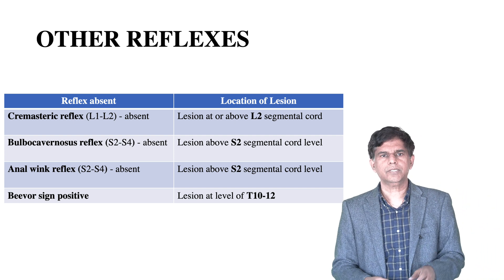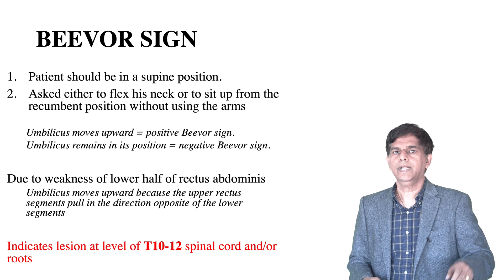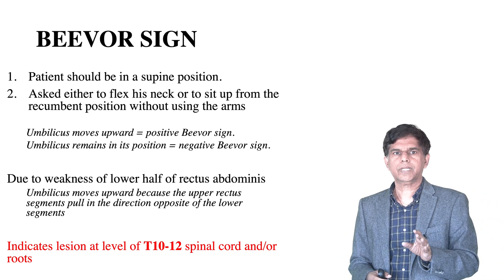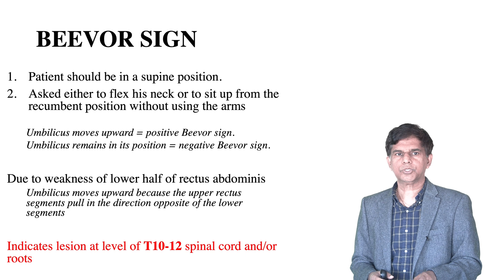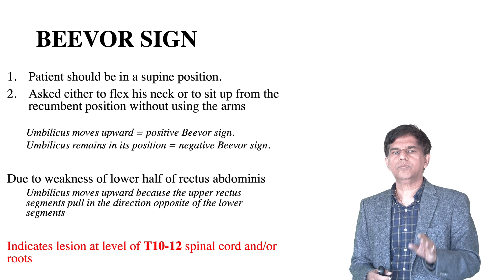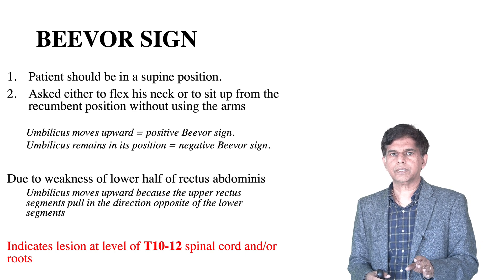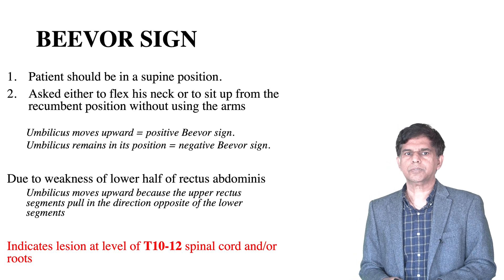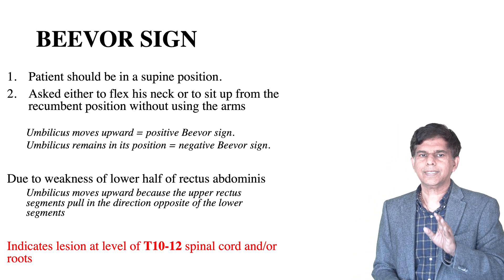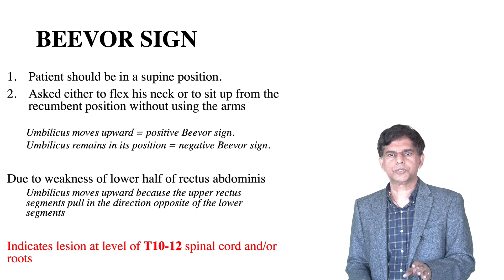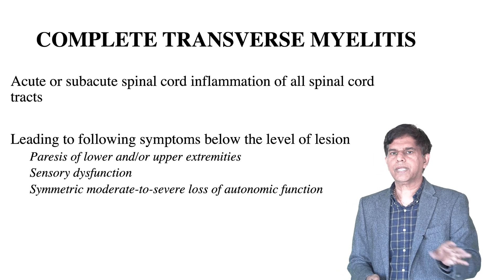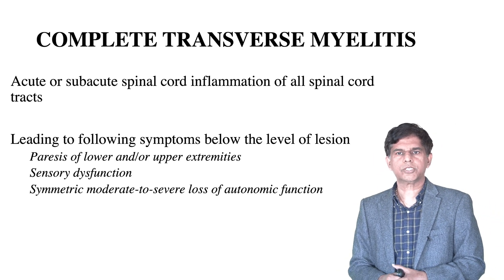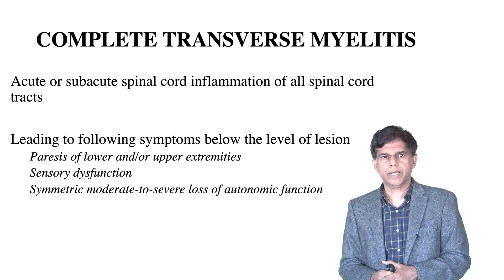The Beevor sign: ask the patient to lie supine and then flex the neck and attempt to sit up from the recumbent position. Observe the movement of the umbilicus. If the umbilicus moves upward, that is a positive Beevor sign, indicating a lesion at the T10-T12 spinal cord level.